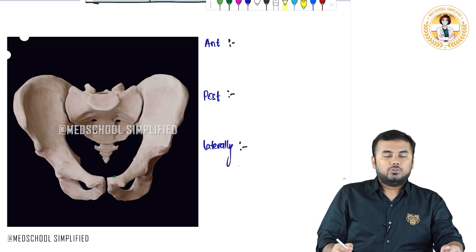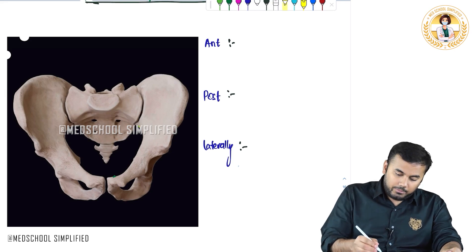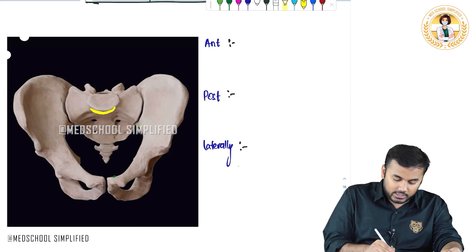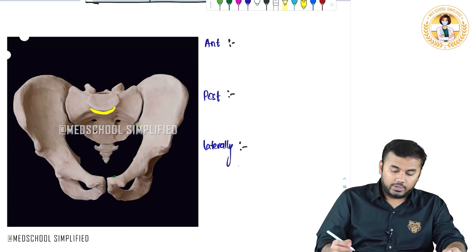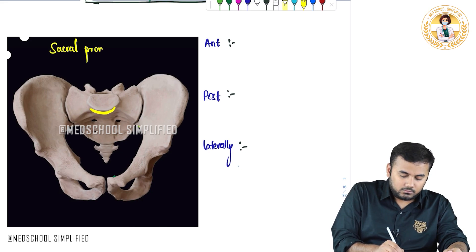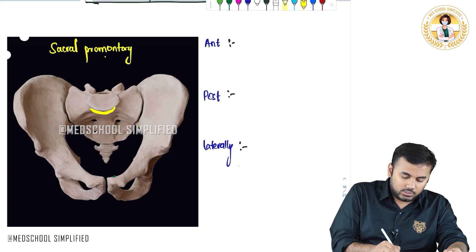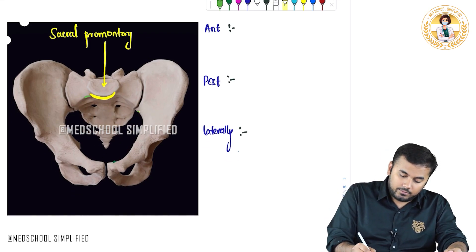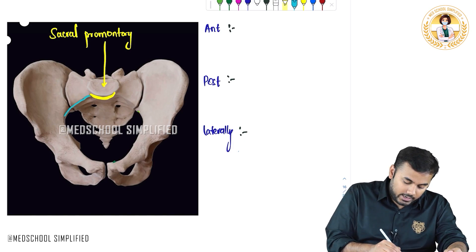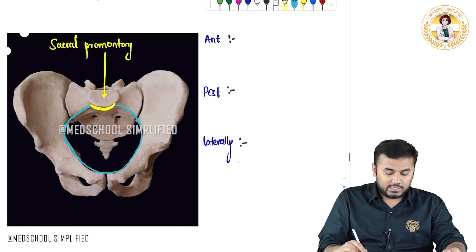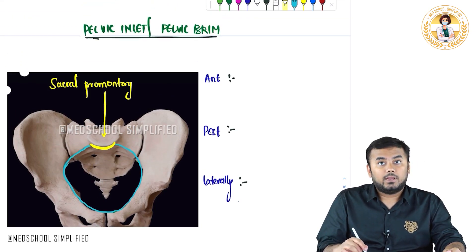Anteriorly, if I draw a line here — this part is called the sacral promontory. Drawing a line all the way around, everything within this line is called the pelvic inlet or the pelvic brim, which is also called the true pelvis.